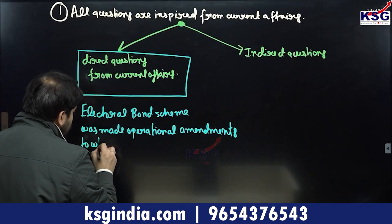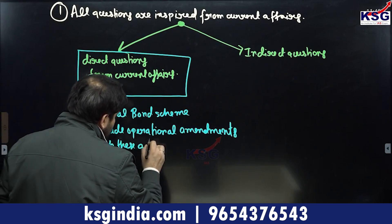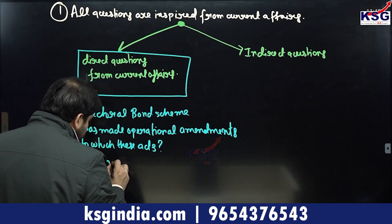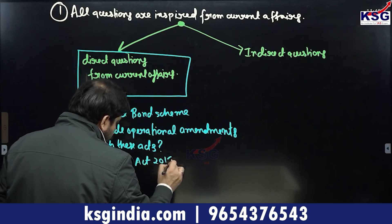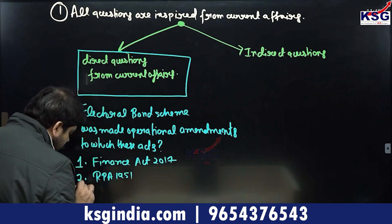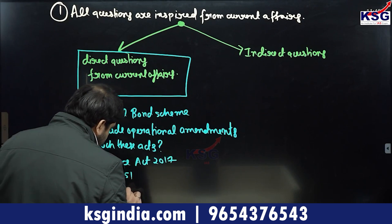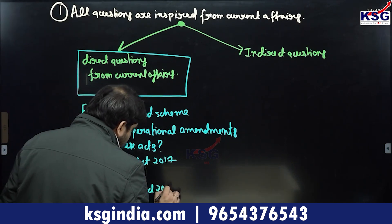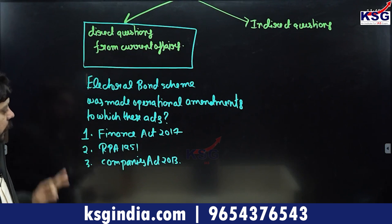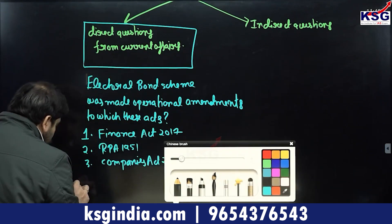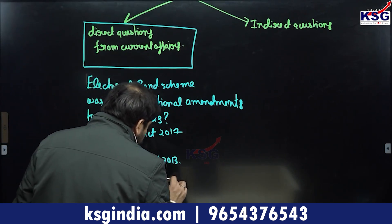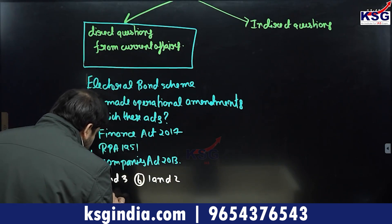The question reads: 'The electoral bond scheme was made operational by amendments to which of these acts?' Option 1 is the Finance Act 2017; option 2 is the Representation of People's Act 1951; option 3 is the Companies Act 2013. The answer choices are: A — 1, 2, and 3; B — 1 and 2; C — 2 and 3; D — 1 and 3.